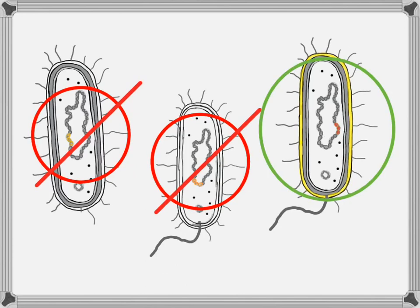While some mutations have no effect on an organism's physical characteristics, some mutations make that organism less strong, less hardy, easier to kill. And some mutations actually can make an organism bigger, better, stronger, tougher to kill.